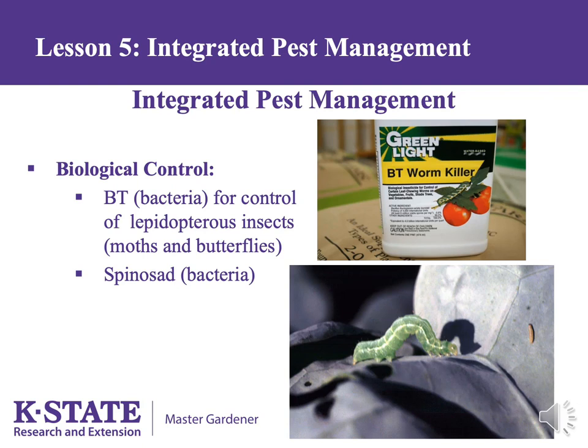Biological control can also be an effective means of dealing with pest problems. Two of the most common biological controls are both bacteria. Bacillus thuringiensis, also called BT, is sold as Dipel and Thuricide and is used to control caterpillars of moths and butterflies. It is very commonly used to control cabbage worms and cabbage loopers on cabbage, broccoli, and cauliflower.